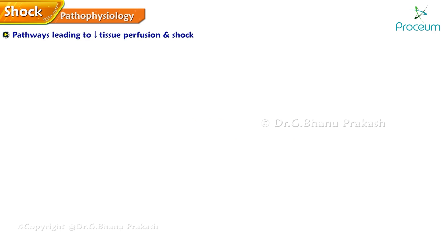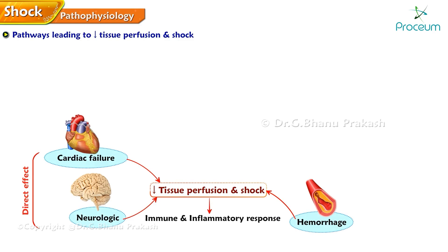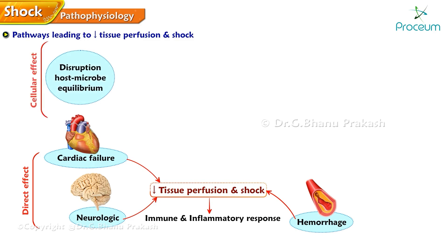The pathways leading to decreased tissue perfusion and shock involve various cellular effects and triggers. Decreased tissue perfusion can result directly from hemorrhage, cardiac failure, or neurologic injury. Decreased tissue perfusion and cellular injury can then result in immune and inflammatory responses. Cellular effects can also result from various factors that disrupt the normal equilibrium between the host and microbes, leading to an inflammatory response and cellular injury.